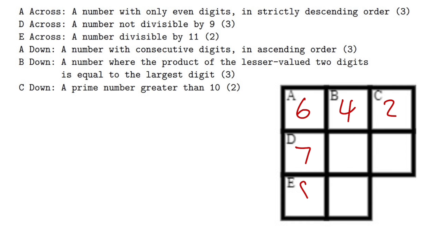Now earlier we mentioned A down. A down says it's a number with consecutive digits in ascending order. We have 6 for sure already, that means we must have 7 and 8. And if you look at E across, it's a number divisible by 11. We know this right here is 8 already. In order to have a multiple of 11, we must have 88. Cool, now we are almost done.